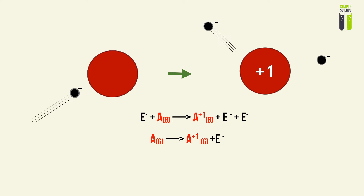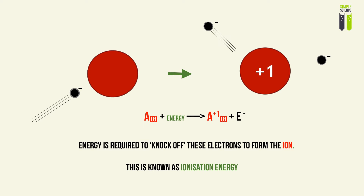We can now cancel one electron from both sides of the equation. This gives us the general equation: atom or molecule forms the ion plus one electron removed. In order to knock off this electron to form the ion, we need to supply it with energy. This energy comes from the kinetic energy of the impact electron, and it is known as ionization energy.